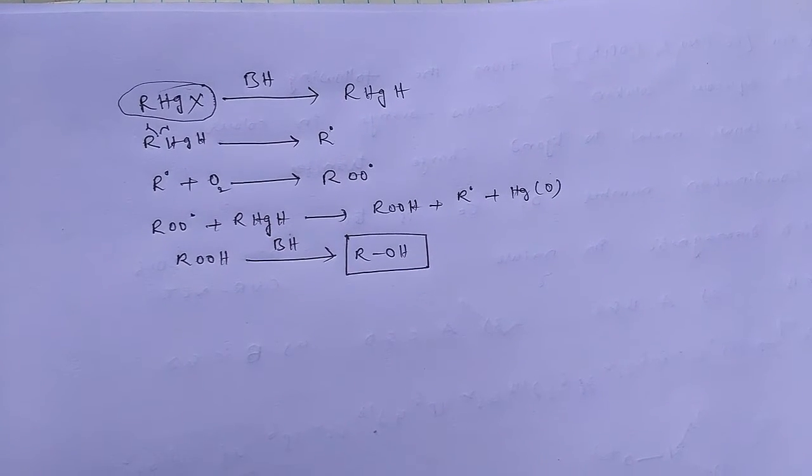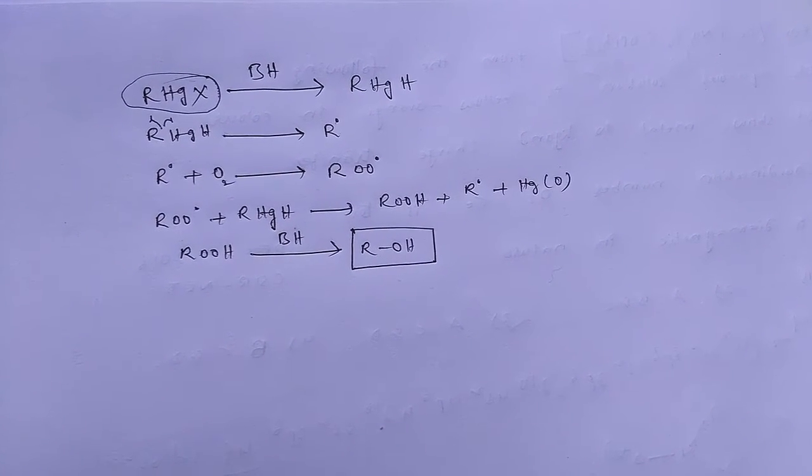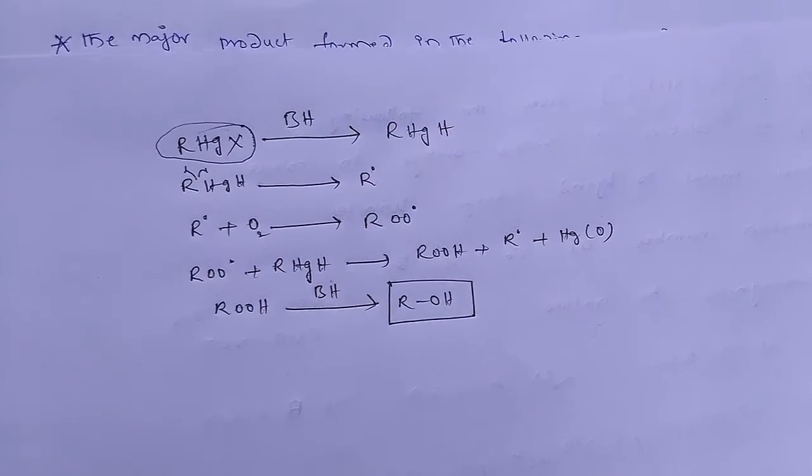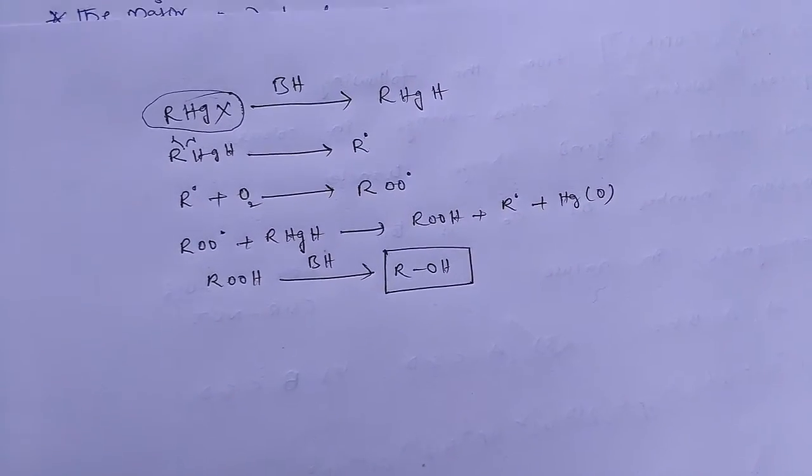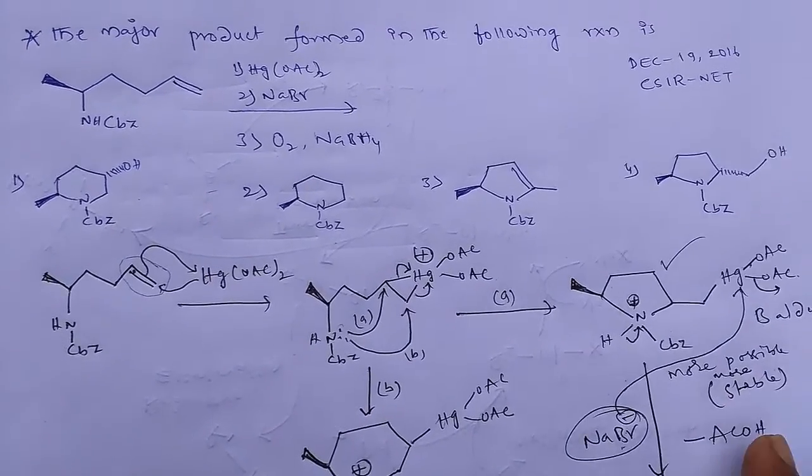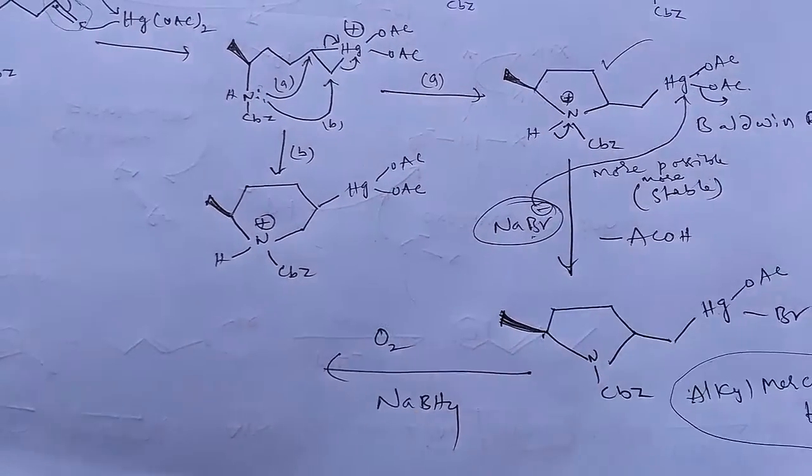And this on further, ROOH on borohydride, produces alcohol. This is the final product we can observe in alkyl mercuric halide compounds. Okay, so this is the generalized mechanism given for it.